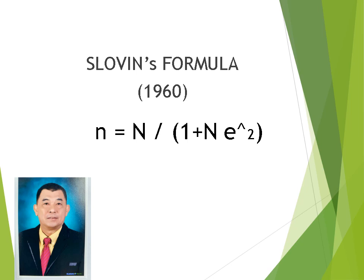Today we are going to study about Slovin's formula. What is this? Slovin's formula is used to calculate an appropriate sample size from a population. Slovin's formula was attributed to Michael Slovin in 1960, but there is little information about him.